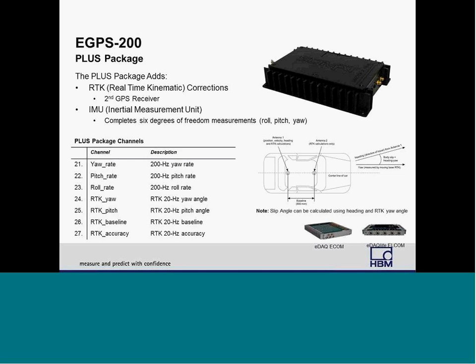The GPS 200 with the plus package provides all the channels of the base model, plus IMU (inertial measurement unit) and RTK (real-time kinematic) measurements. The IMU option improves acceleration accuracy and completes the six degrees of freedom measurement by adding axis rotation: roll, pitch, and yaw. The real-time kinematic option uses readings from two GPS antennas to output high-accuracy yaw, pitch, and slip angle measurements. The eGPS 200 directly measures yaw and pitch at any time, while slip angle calculations require the vehicle to be in motion. For more information, visit our website at www.hbm.com.